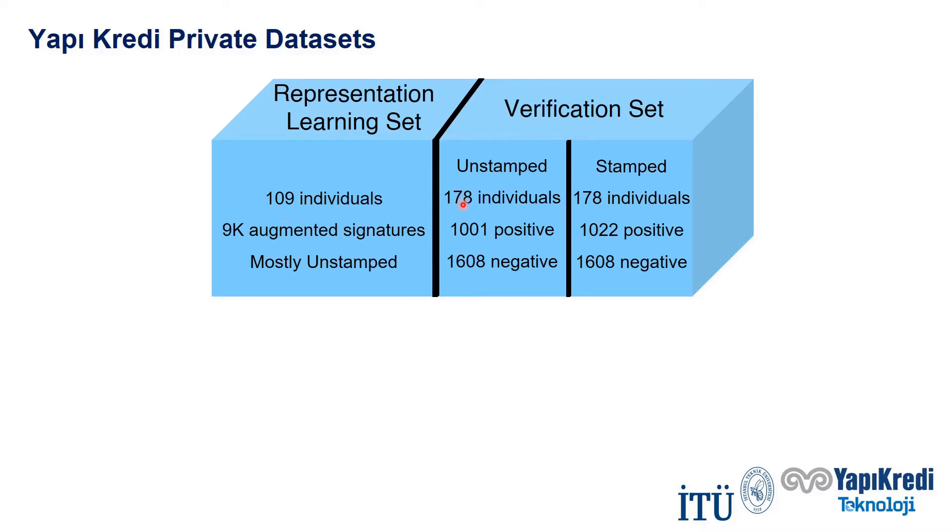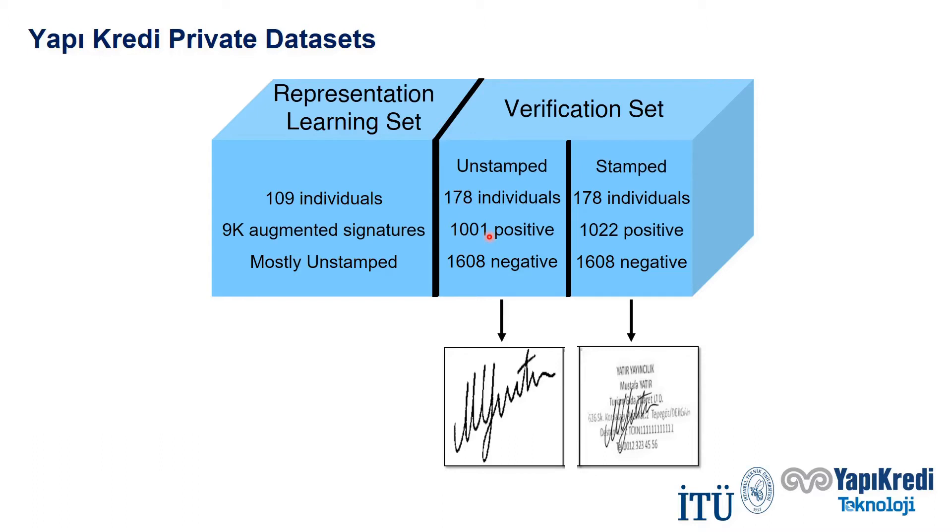Positive pairs are formed with reference signatures in the customer signature declaration form with unstamped or stamped signatures of the same user. Negative pairs are randomly selected pairs. Please note that we cannot publish the dataset due to data confidentiality, but you can see imitated unstamped and stamped signature examples.